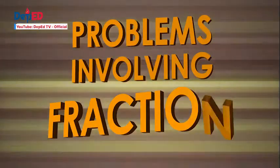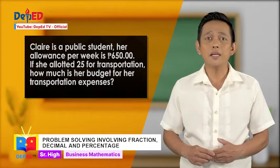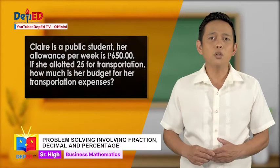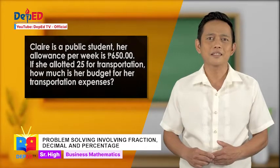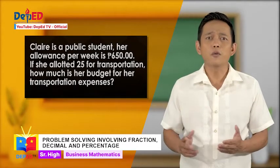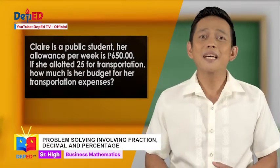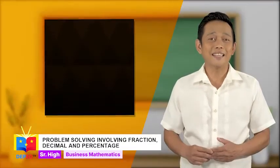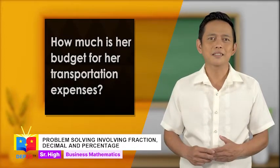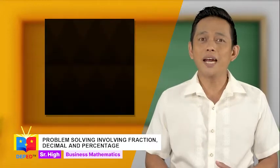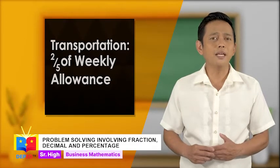Problem Solving Involving Fraction. Claire is a public student. Her allowance per week is 650 pesos. If she allotted 2/5 for transportation, how much is her budget for transportation expenses? Can we help Claire compute for her budget? Remember to use the following steps in solving word problems. Identify what is asked: how much is her budget for transportation expenses? Enumerate the given: weekly allowance is 650 pesos, and transportation expenses is 2/5 of weekly allowance.